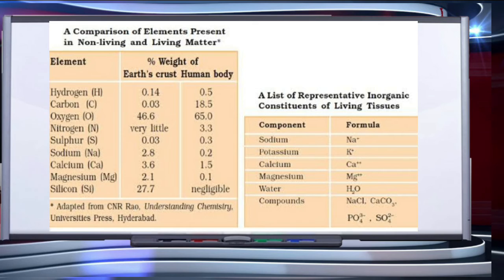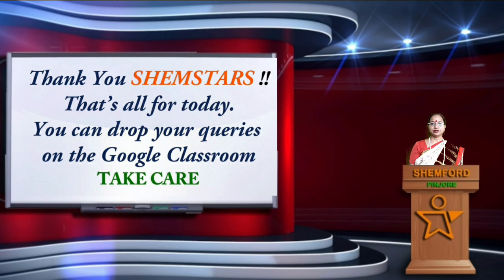Another table shows a list of representative inorganic constituents of living tissues, including sodium, potassium, calcium, magnesium, water, and other compounds. So children, this is all about biomolecules — what they are and how to analyze their chemical composition. In the next video, we will talk about the major types of biomolecules one by one. Thank you, Chem Stars — that's all for today. You can drop your queries on Google Classroom. Take care!